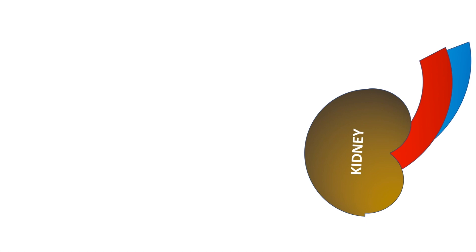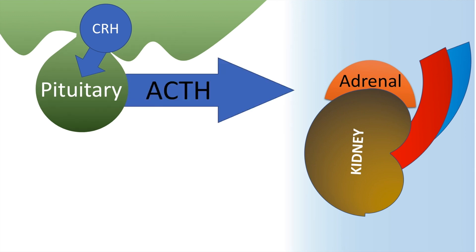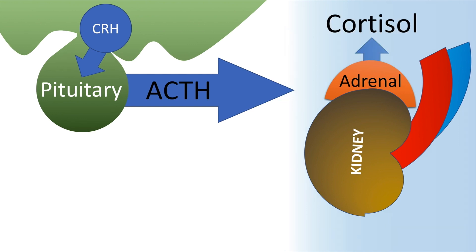This is the kidney and this is the adrenal gland. This is the pituitary. The hypothalamus secretes corticotropin releasing hormone. In response to this hormone, the pituitary secretes adrenocorticotrophic hormone or ACTH, in response to which the adrenals secrete cortisol and other hormones. This is the basic structure of the hypothalamo-pituitary-adrenal axis or the HPA axis.